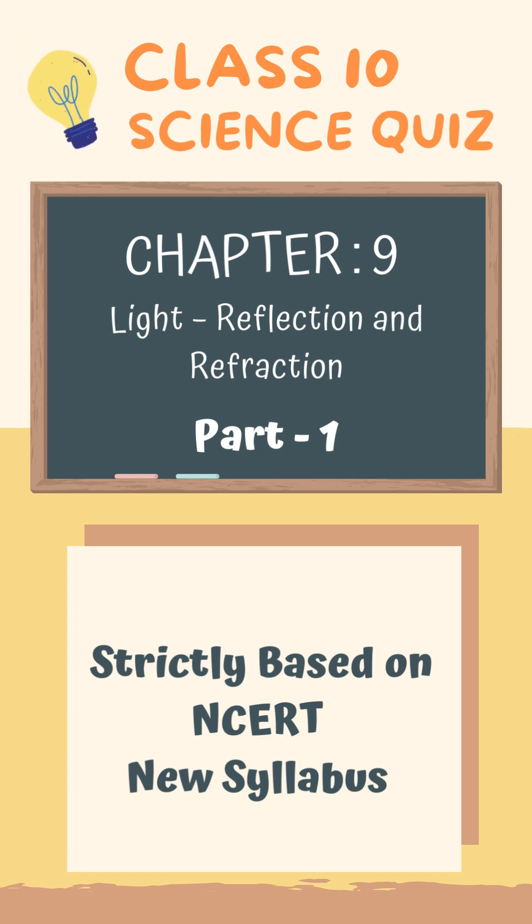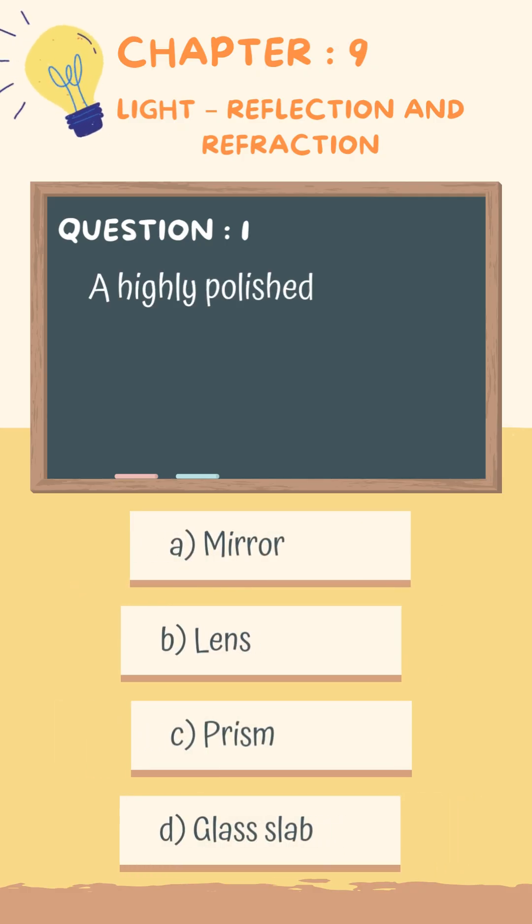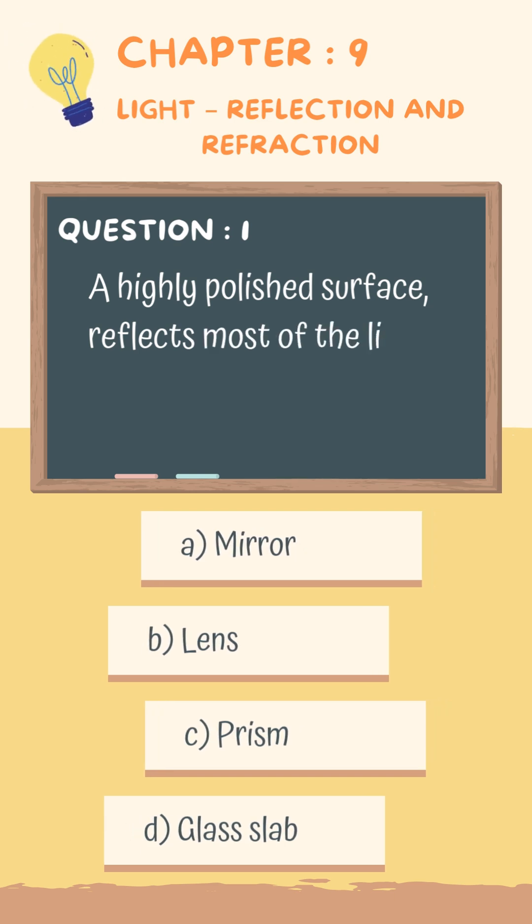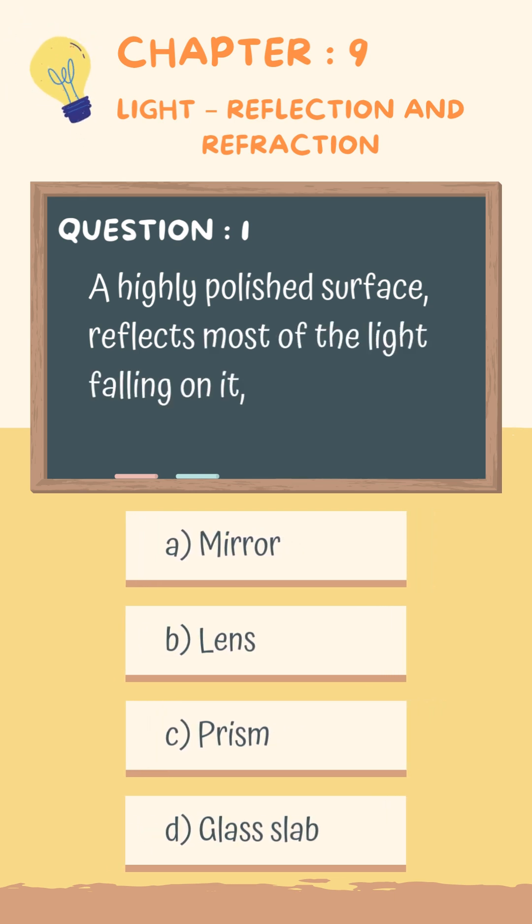These questions are strictly based on NCERT. Question 1. A highly polished surface reflects most of the light falling on it is known as: A. Mirror, B. Lens, C. Prism, D. Glass Slab.